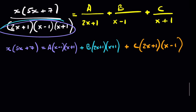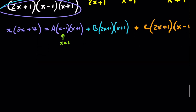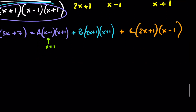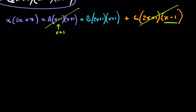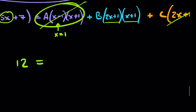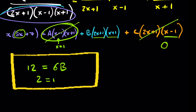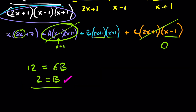We pick values to substitute in. Let's start with x=1: the A term and the C term both disappear. Substituting x=1 into the left gives 5+7=12. On the right, we have B(2+1)(1+1) = 6B. So 12=6B, giving B=2.